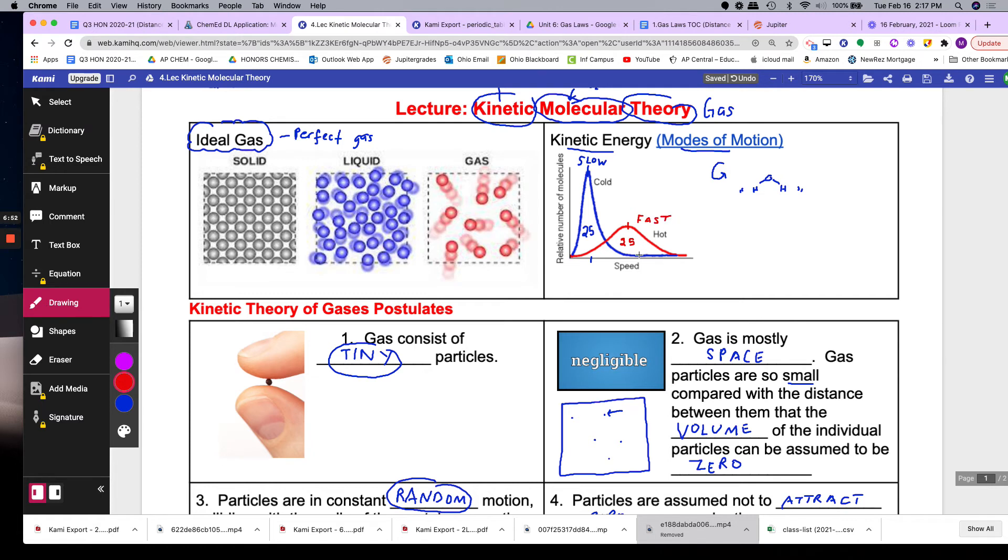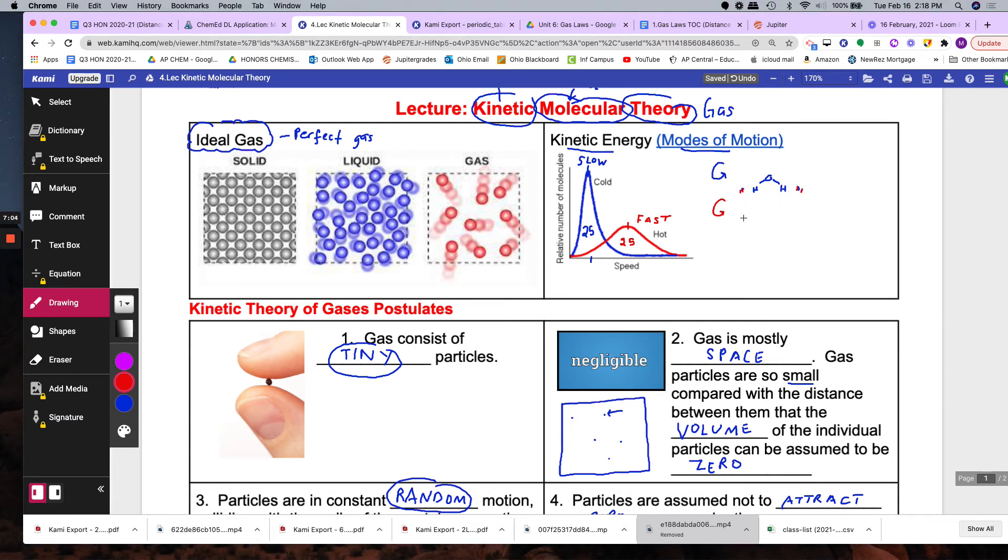So you might wonder why did it get flatter and broader. The reason it got broader is because the energy you're putting in is making the molecules rotate and vibrate as well, which means it's not only going into the translational motion. But this curve does prove that if the molecules are hot they will go fast on average.